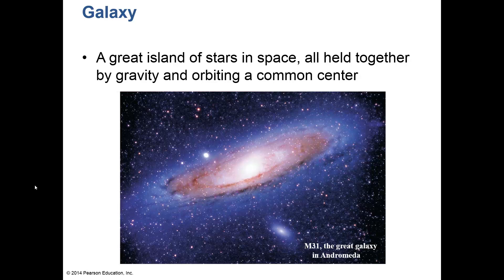Going even farther out, we live in the Milky Way galaxy with about 200 billion stars. Galaxies are great islands of stars in space, held together by gravity and orbiting a common center — often a black hole. The Andromeda galaxy M31 is visible in the fall sky, has its own satellite galaxies, and is about twice the size of our galaxy with roughly 400 billion stars. Our galaxy and the Andromeda galaxy are actually coming together, though that's hundreds of billions of years away.